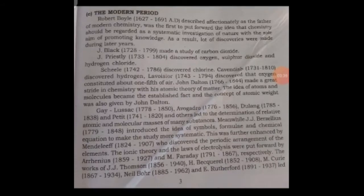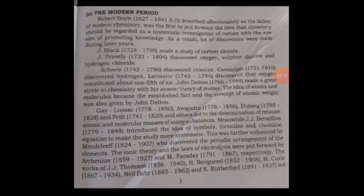A lot of discoveries were made during later years. The second modern scientist, Jay Black, made a study of carbon dioxide. Jay Priestley discovered oxygen, sulfur dioxide and hydrogen chloride gas. Scheele discovered chlorine.